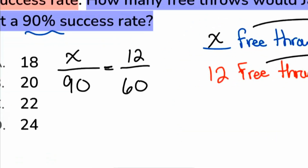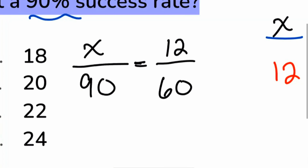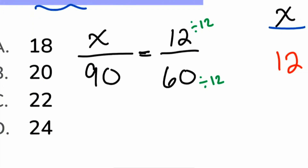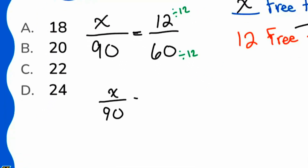As soon as we solve for X, we're done. And remember, before you solve proportions, it's always best to see if you can simplify before doing any cross multiplication. I noticed that 12 and 60 are both divisible by 12. So divide by 12 in the numerator and divide by 12 in the denominator — giving us X over 90 equals 1 over 5. That becomes much, much easier to handle, rather than dealing with two two-digit numbers and then having to divide by 60.